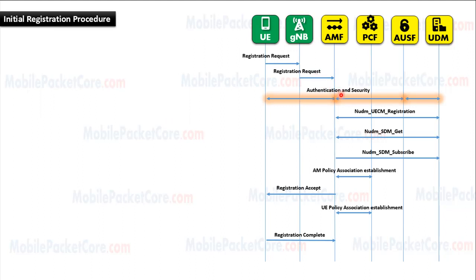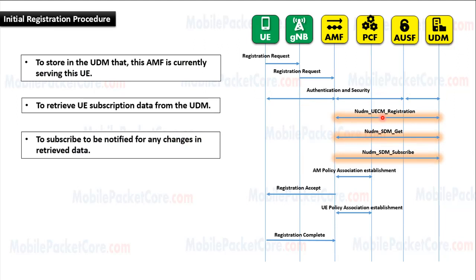Then the AMF performs authentication and security for the UE in coordination with the AUSF and the UDM. Then the AMF performs UE-CM registration with the UDM.